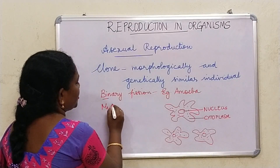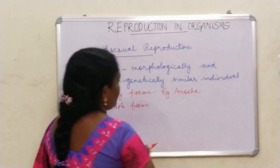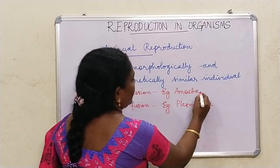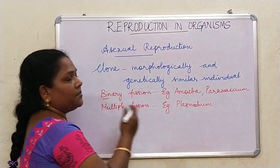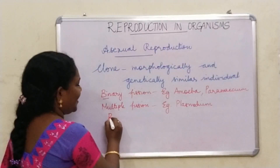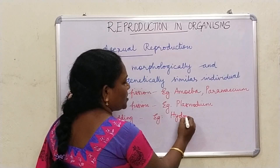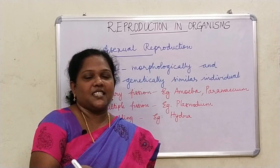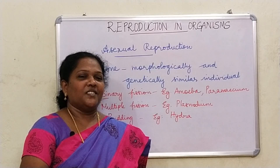Then there is multiple fission. The example is Plasmodium. Other examples include Amoeba, Paramecium, and Leishmania. In multiple fission, the organism divides into many daughter cells; a very good example is Plasmodium. Then there is budding. In budding, a small bud develops from the parent — or mother — Hydra. The bud is an outgrowth that develops, matures, and enlarges; when it develops into an individual, it gets detached from the mother Hydra and leads an independent life.